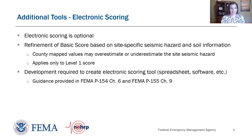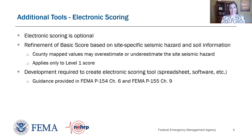Electronic scoring is an optional process where scores are calculated electronically rather than using paper scores. We can make a spreadsheet that has all the basic scores and modifiers, input which modifiers apply, and calculate scores electronically. There are also ways to refine the basic scores and score modifiers for the specific seismic hazard that we have.